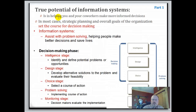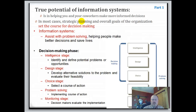The true potential of information systems is in helping you and your co-workers make an informed decision — that's really the goal of information systems. In most cases, strategic planning and overall goals of the organization set the course for decision making. What these information systems do is assist with problem solving, helping people make better decisions and even save lives.